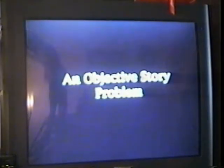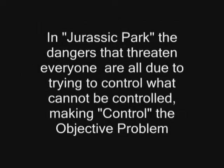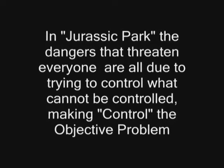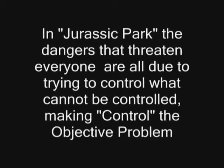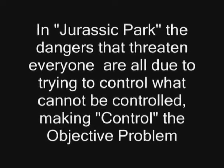In Jurassic Park, that problem is control — the attempt to control. They try to put up the fences, they try to take care of the genes, they do everything they can because they believe they can control things. And in fact, it is the attempt to control that is at the heart of the problem of Jurassic Park for all the characters. That's why it's the objective story problem.